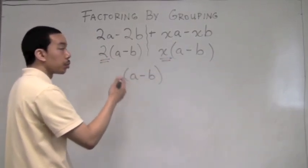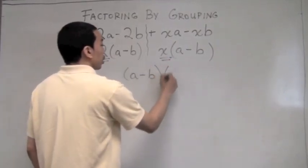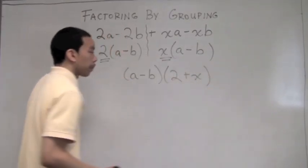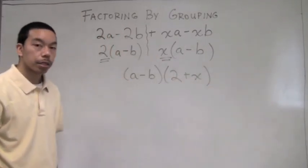So what repeats itself can be rewritten as a minus b. Those on the outside, the 2 and the x, can be written as 2 plus x. And this is the factorization by grouping.